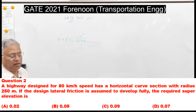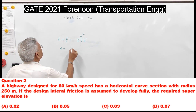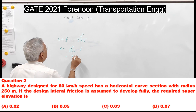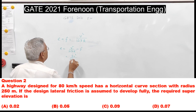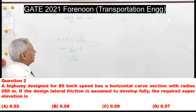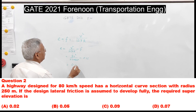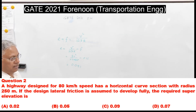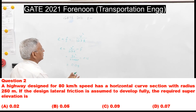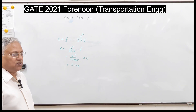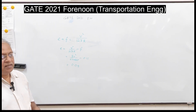The value of f for a design speed of 80 km/h is 0.15, so e = v²/(127R) − f. Substituting: 80² / (127 × 250) − 0.15 = 0.051. Rounding to two decimal places gives 0.05, so the correct answer is B.